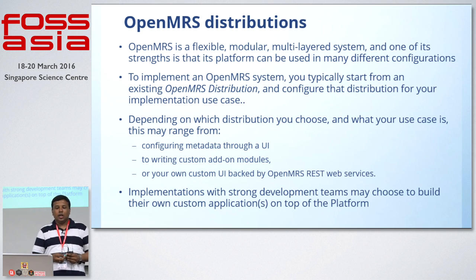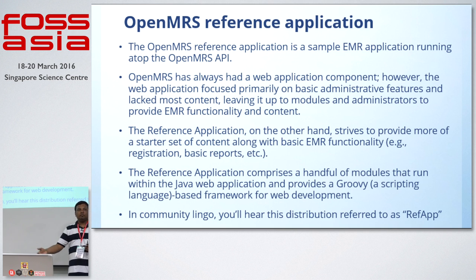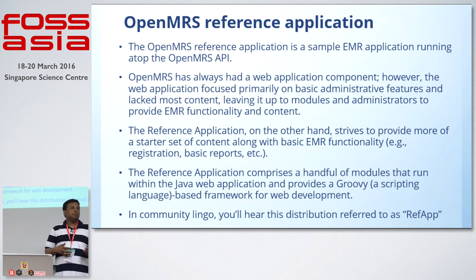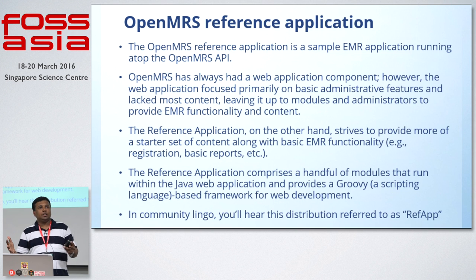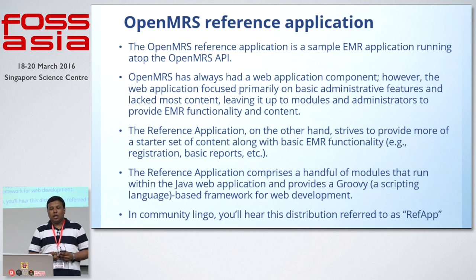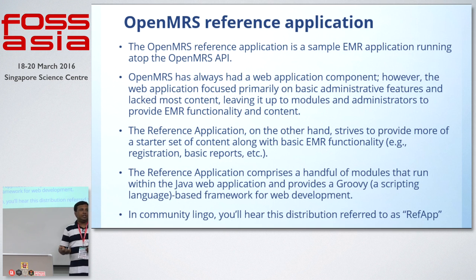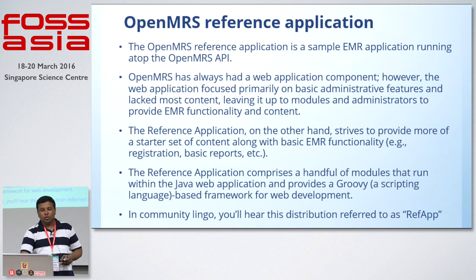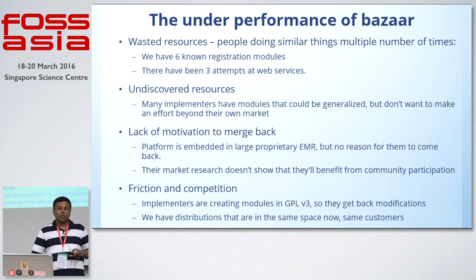Implementations with strong development teams choose to build their own custom applications on top of the platform. Another kind of distribution we build is called the OpenMRS Reference Application — essentially a showcase of the platform. It's a sample electronic medical record system for showcasing what could be built on top of the platform, not for a particular use case. It starts with basic functionality like registration and reporting, using Groovy and Java. In the community lingo, we call this a ref app, and there have been many more distributions coming up recently.